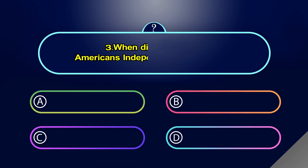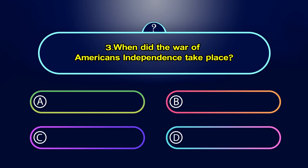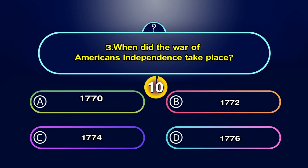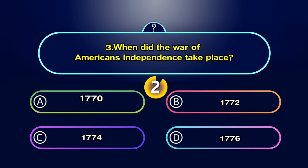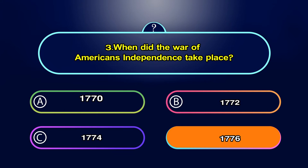When did the War of American Independence take place? Option A. 1770, Option B. 1772, Option C. 1774, Option D. 1776. Your time starts now. The answer is D. 1776.